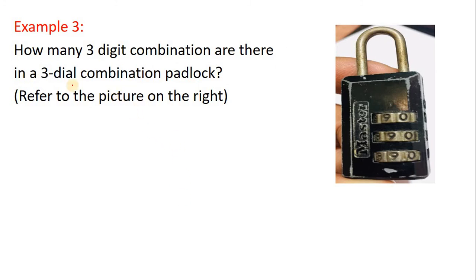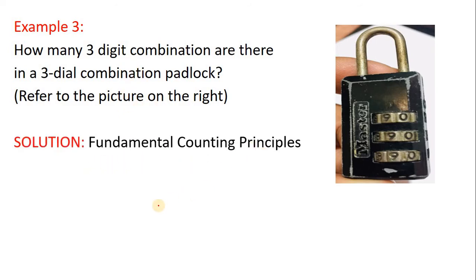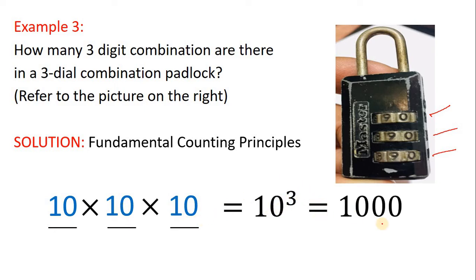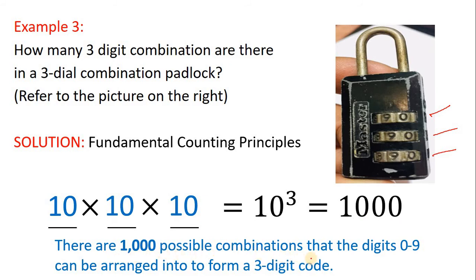Let's go to example number 3. How many 3-digit combinations are there in a 3-dial combination padlock? We use the fundamental counting principle with 3 actions. For the first action, you have digits 0 to 9, so there are 10 options. The second action also has digits 0 to 9 — still 10. The third action still has 10 digits. Taking the product: 10 cubed equals 1,000. So there are 1,000 possible combinations.